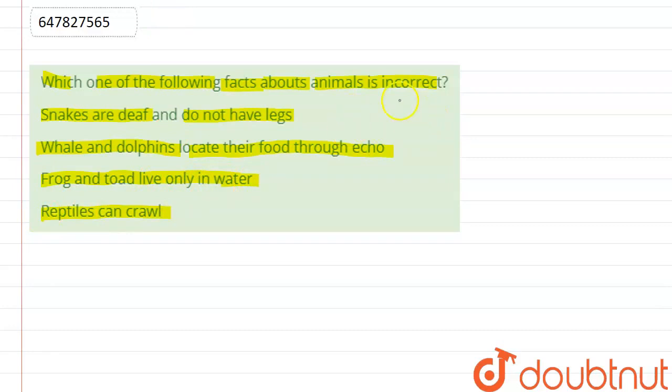So guys, this question asks which option is incorrect, meaning which is wrong. Snakes are deaf. Deaf means what? Which one does not have ear drum. Ear drum absent. It means that they cannot listen. They can sense vibrations. They don't listen.